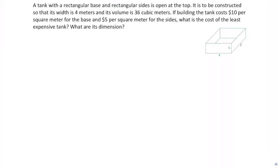Okay, let's go over this question. The question gives us a tank with a rectangular base. It's open at the top. It's to be constructed so that its width is 4 meters and its volume is 36 cubic meters. If building a tank costs $10 per square meter for the base and $5 per square meter for the sides, what is the cost of the least expensive tank? What are its dimensions?